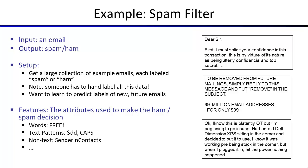Spam filtering is going to be one of our two running examples for the next few lectures. In a spam filter, the input is an email you've received and the output is thumbs up or thumbs down — is this spam or ham? Spam is like canned gelatinous ham, and ham is real ham — that's the analogy. So good emails are called ham.